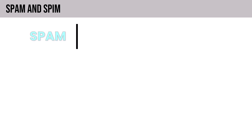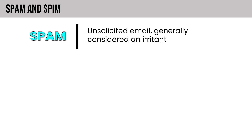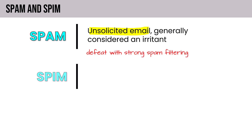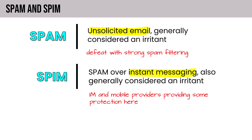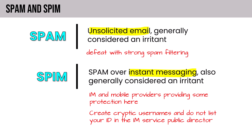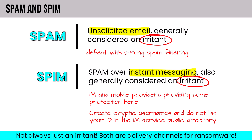Spam and SPIM also appear in the official study guide as phishing-related variants. Spam is unsolicited email, generally considered an irritant, defeated with strong filtering. SPIM is spam over instant messaging, also generally an irritant — your IM and mobile providers offer some protection, and major carriers now have apps that identify malicious text messages. You want to create usernames that aren't easily guessable and avoid adding your ID to public directories. But bear in mind, while both are generally irritants, they are also delivery channels for ransomware.